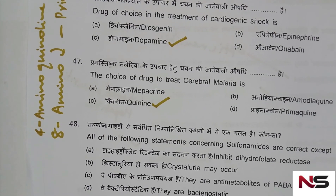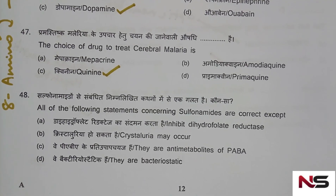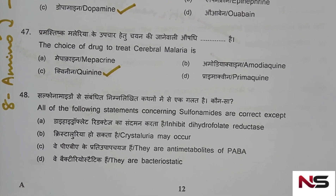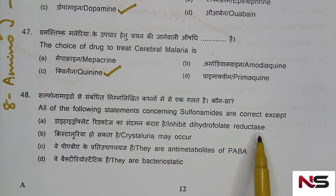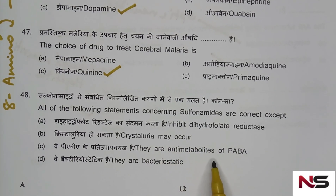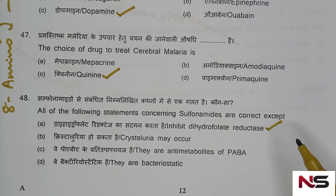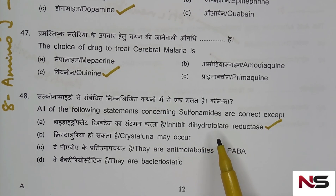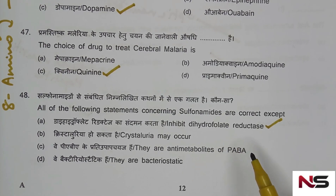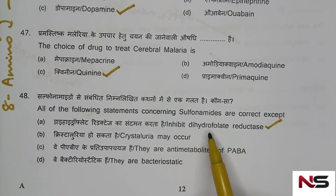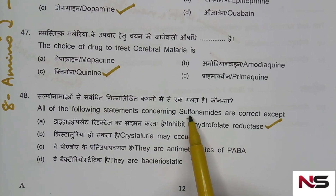Question 48: All of the following statements concerning sulfonamides are correct except — options include: they inhibit dihydrofolate reductase, crystalluria may occur, they are antimetabolites of PABA, they are bacteriostatic. The correct answer (incorrect statement) is option A — sulfonamides inhibit folate synthase enzyme, not dihydrofolate reductase. Dihydrofolate reductase is inhibited by trimethoprim.